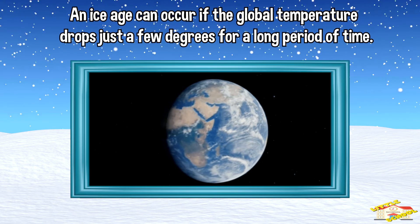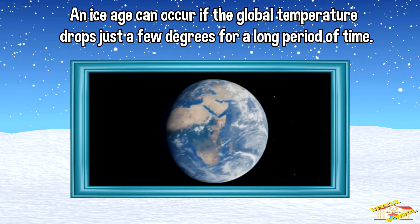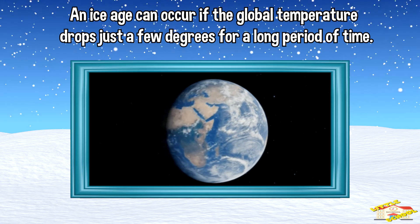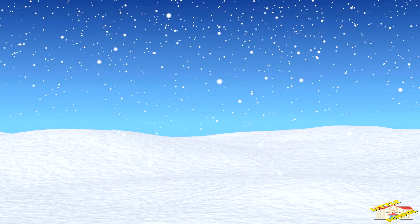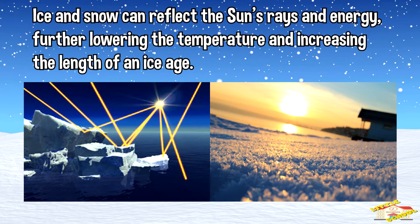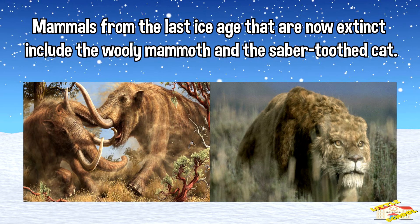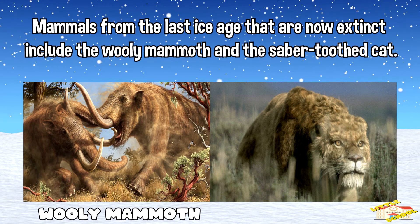An ice age can occur if the global temperature drops just a few degrees for a long period of time. Ice and snow can reflect the sun's rays and energy, further lowering the temperature and increasing the length of an ice age. Mammals from the last ice age that are now extinct include the woolly mammoth and the saber-toothed cat.